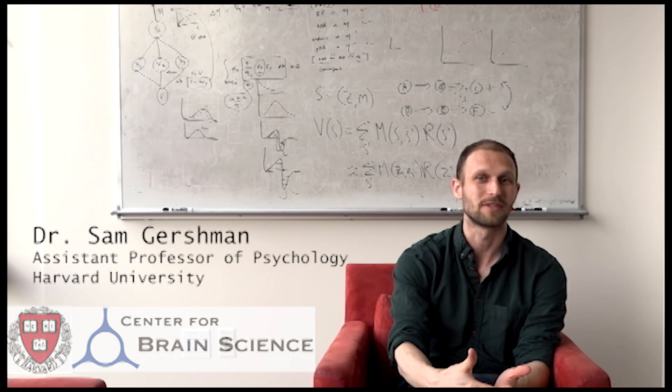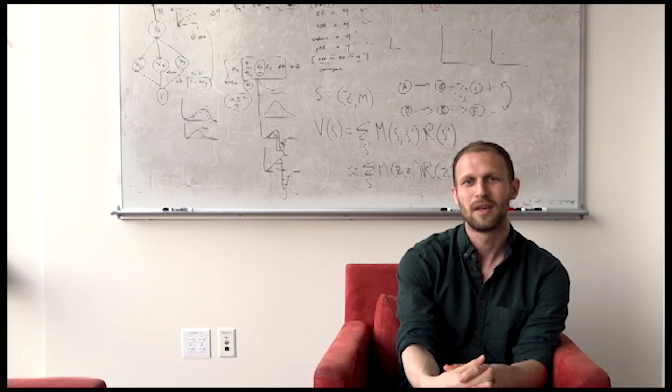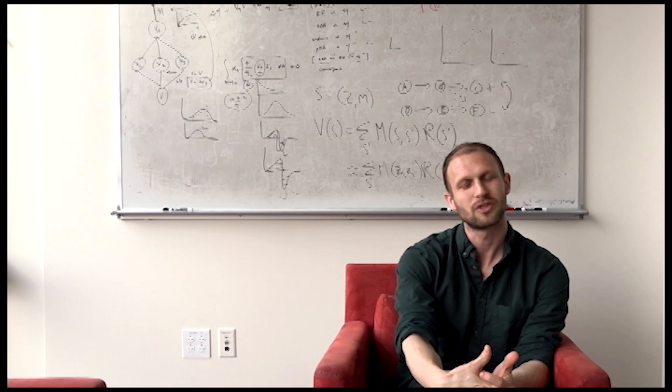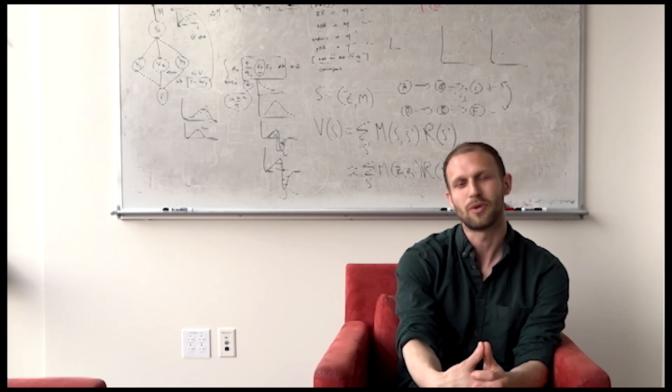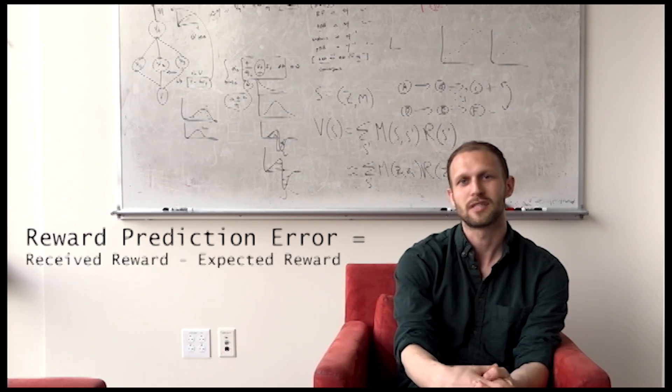Dopamine is one of the great success stories of theoretical neuroscience, and the story starts several decades ago when neuroscientists came up with a really striking hypothesis about what dopamine was signaling, namely the reward prediction error, the discrepancy between received and experienced reward.